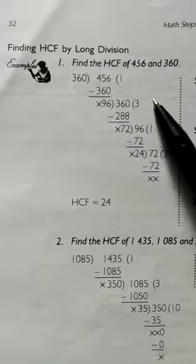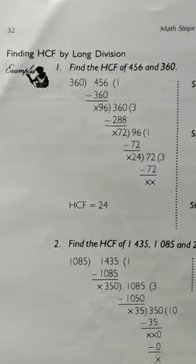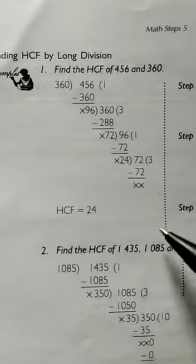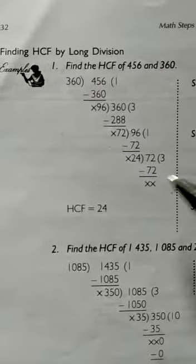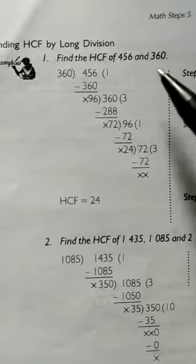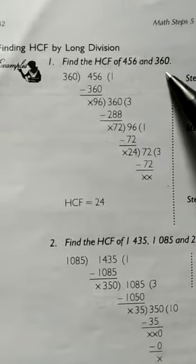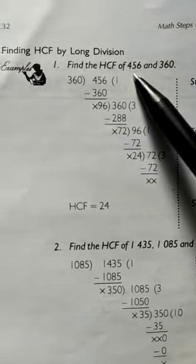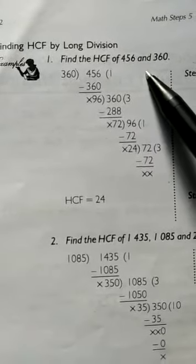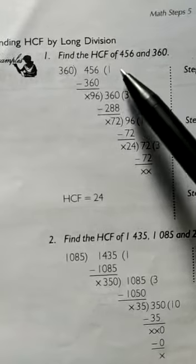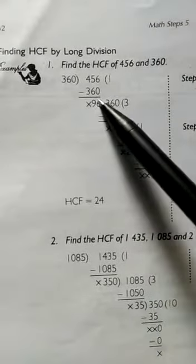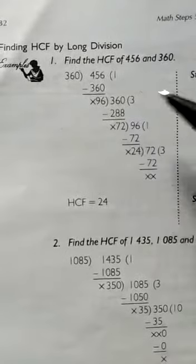So what is the first step for this type of problem using the long division method? In Step 1, divide the greater number by the smaller number. We recognize that the greater number is 456 and the smaller number is 360, so we divide 456 by 360.